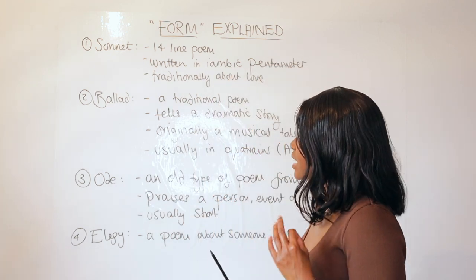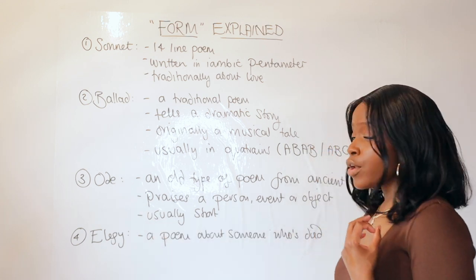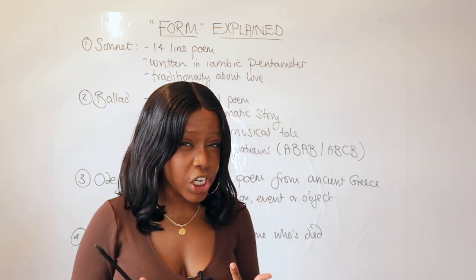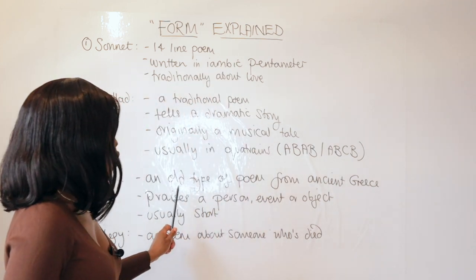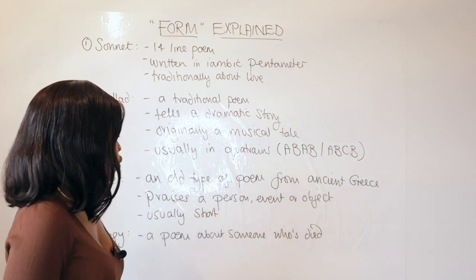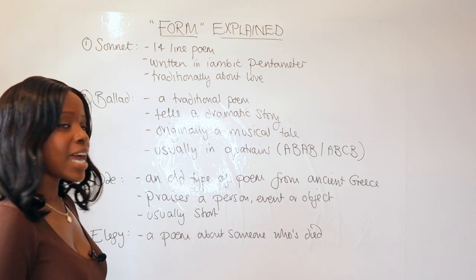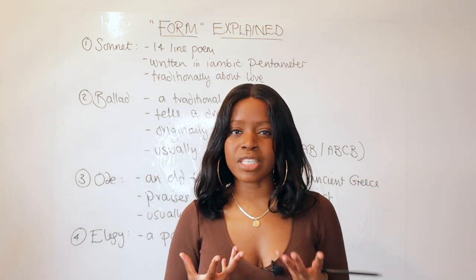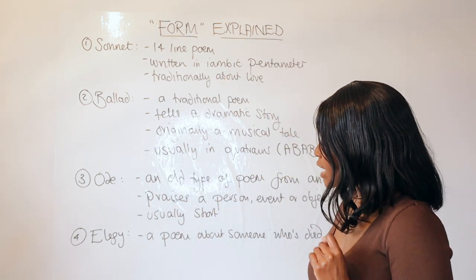The next popular type of form is what we call an ode. An ode is actually a very old style of poetry that originated in ancient Greece, so in classic civilization. An ode came from ancient Greece, and it basically is a poem that praises a person, event, or object, and it's usually fairly brief. So an ode tends to be a poem that's praising a person but is actually quite brief.